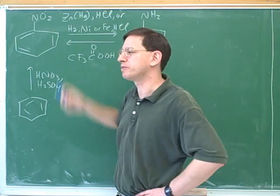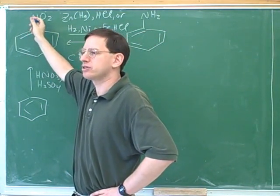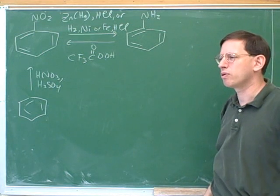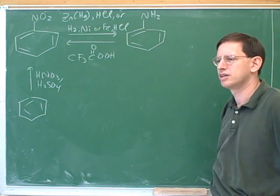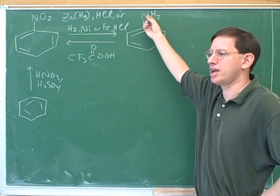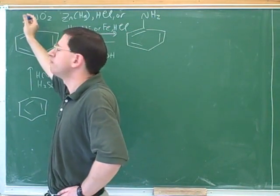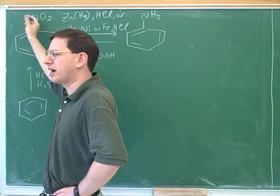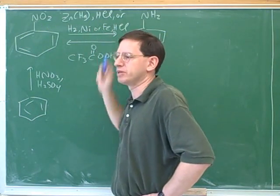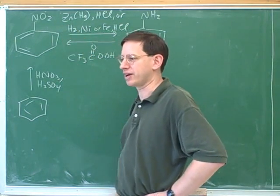Why would it be useful to be able to go back and forth between the two of these? Would we consider this to be an ortho-para director or a meta director? Meta. This is a meta director, and how about this? Ortho-para. Why do they have different directing abilities? Because amine is not withdrawing. It's donating. This has a lone pair, so it's electron donating, which puts it in the activating and ortho-para directing group. But the resonance structure here has no lone pairs on the nitrogen and a positive charge on the nitrogen, so this is a deactivator and a meta director.